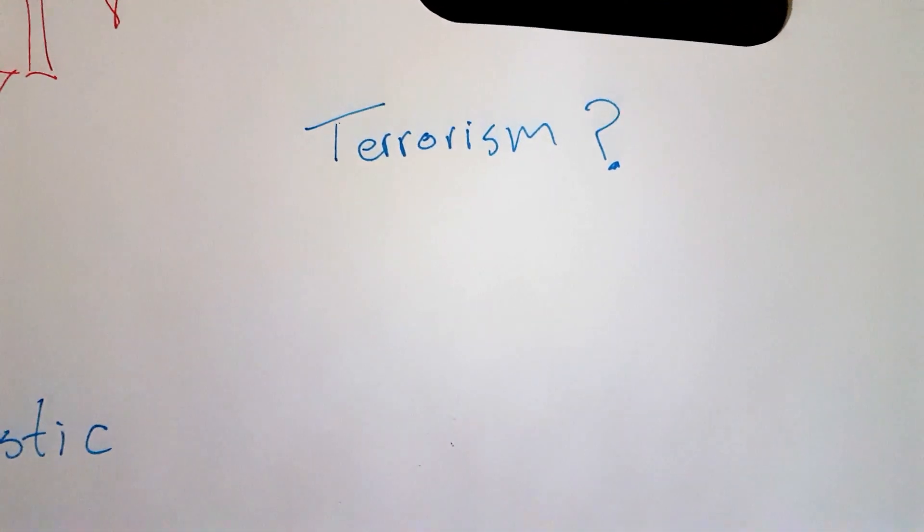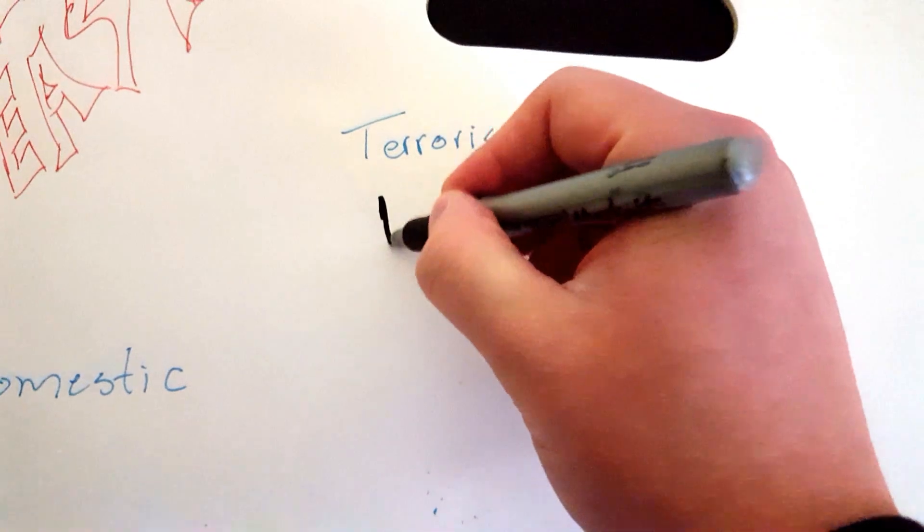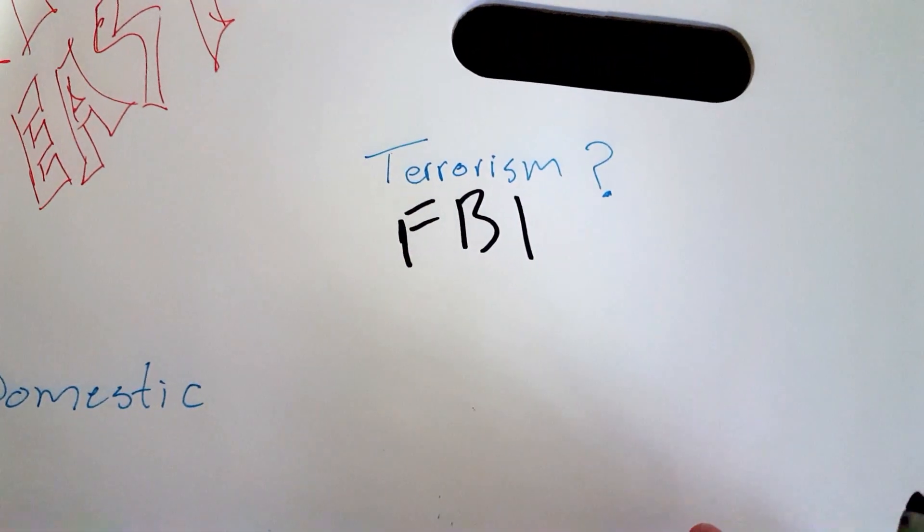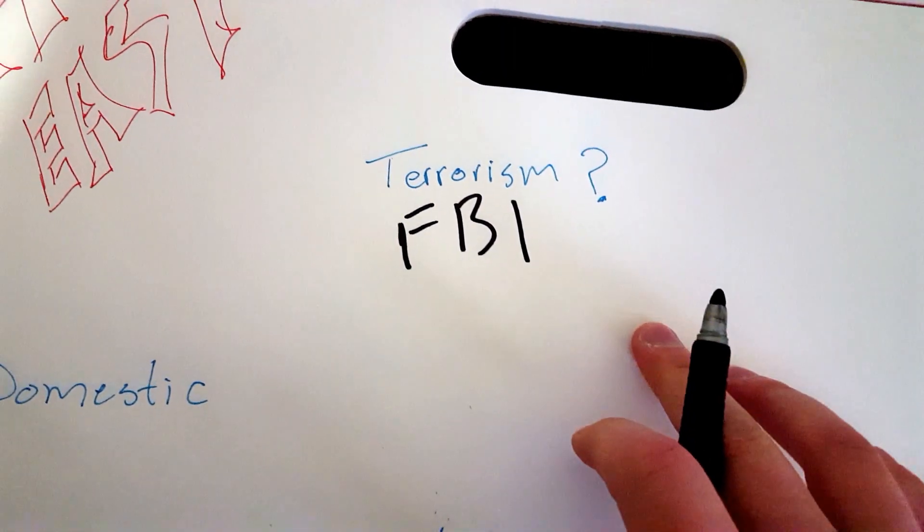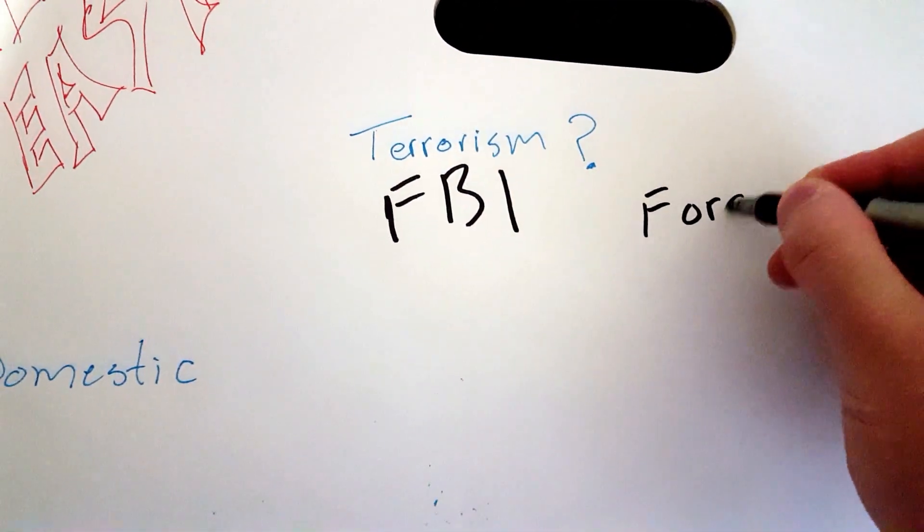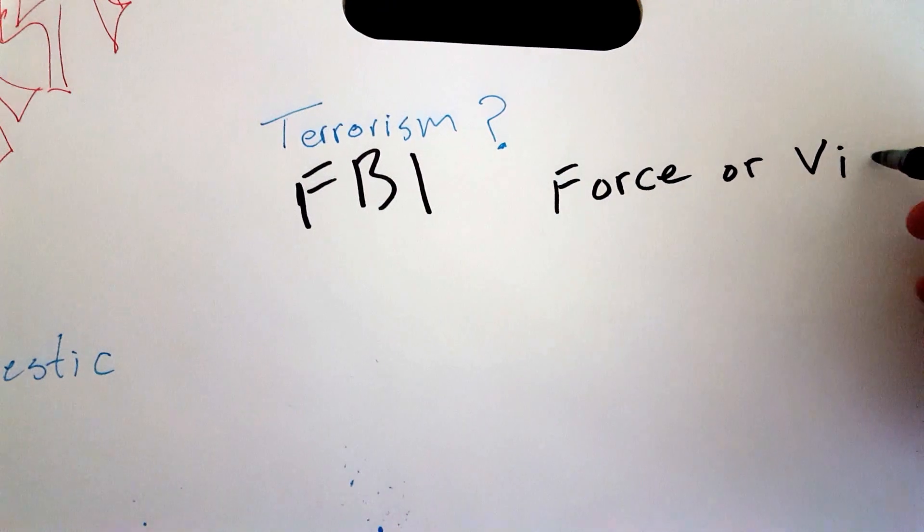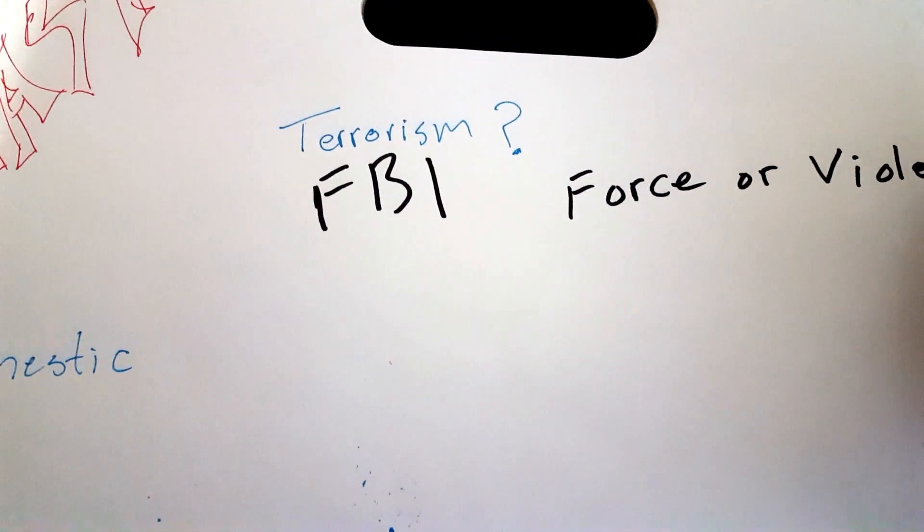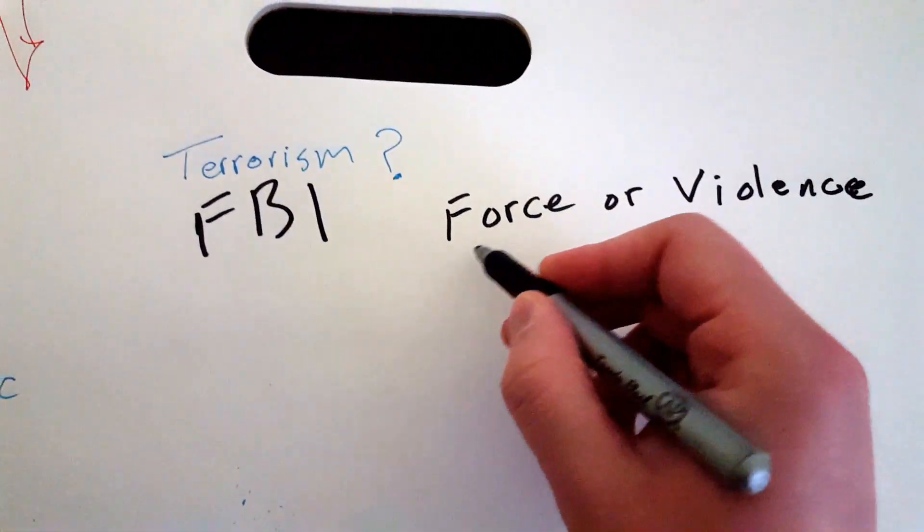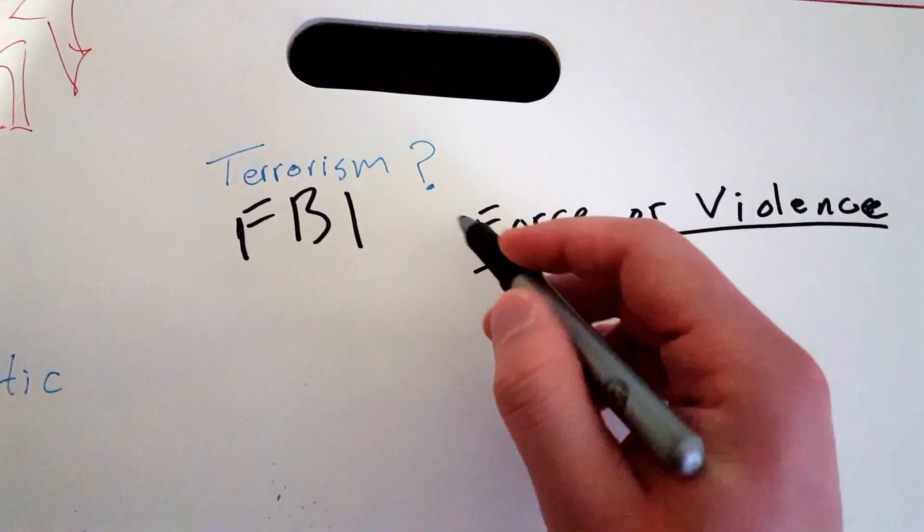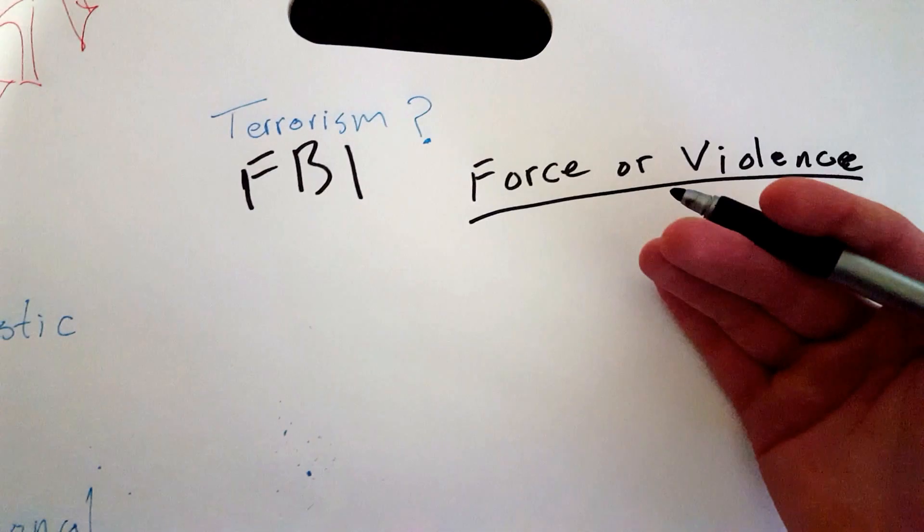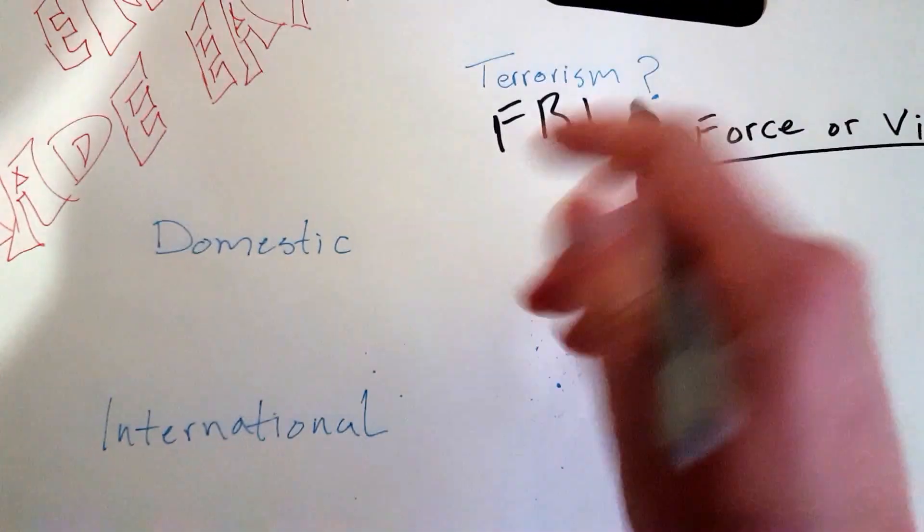So what exactly is terrorism? Well, according to the FBI, terrorism is someone or a group of individuals that use force or violence to intimidate others. So terrorists use force or violence to scare other people, to intimidate people. That's what terrorism is according to the FBI.